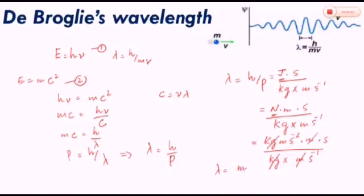So lambda is left with m s minus 2. When this s minus 1 is moved up, its power becomes positive. So 1 plus 1 will be 2. So s minus 2 and s plus 2 will also be cancelled out. So units of lambda will be in meters.